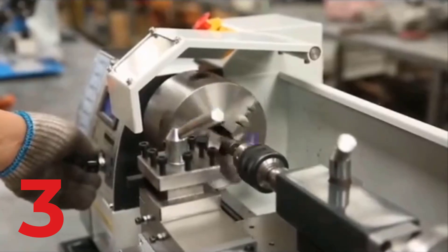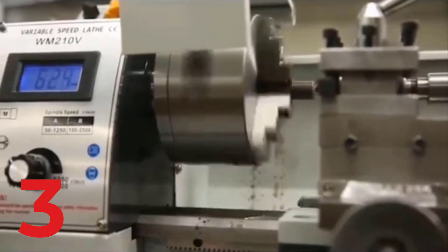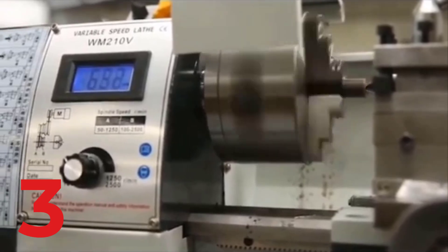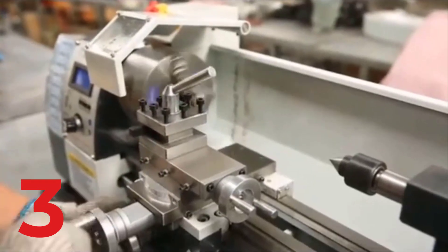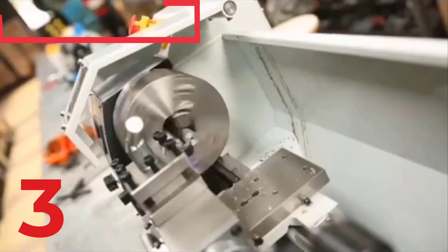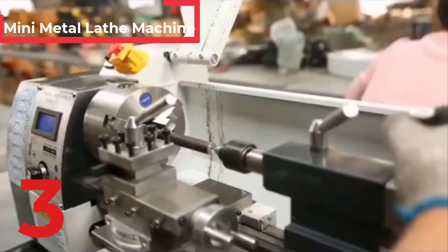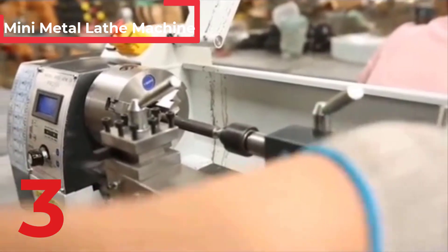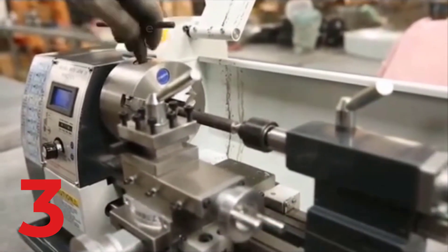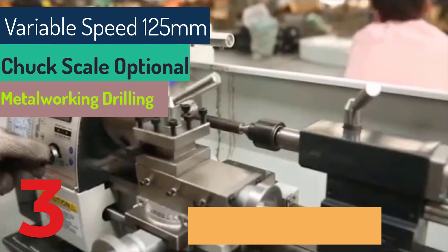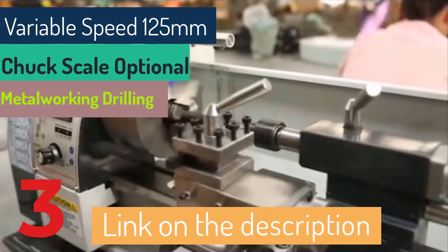The mini metal lathe machine, 15 to 3 quarter inch, 1100 watt, offers variable speed ranging from 50 to 2500 RPM, making it versatile for metalworking and drilling. With a 125 millimeter chuck and scale options, it accommodates various precision tasks. This CNC lathe features a horizontal design, is EU plug compatible, and is certified by CE for quality assurance.